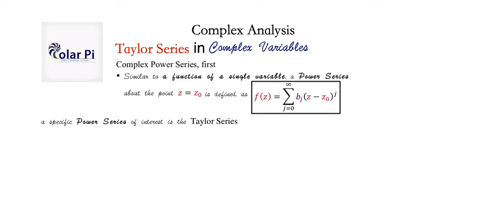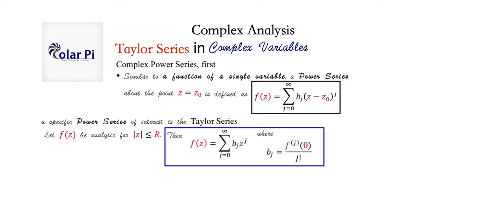If f is analytic in and on a circle centered at the origin with radius r, then the Taylor series for f is given by this blue box here. The Taylor series for f is this infinite sum, and the b sub j's are given by this quotient. Each of the b sub j's is a corresponding coefficient to each of the z to the power j's. For example, z to the third will have as its coefficient b sub three, and b sub three will be equal to the third derivative of f evaluated at zero divided by three factorial.